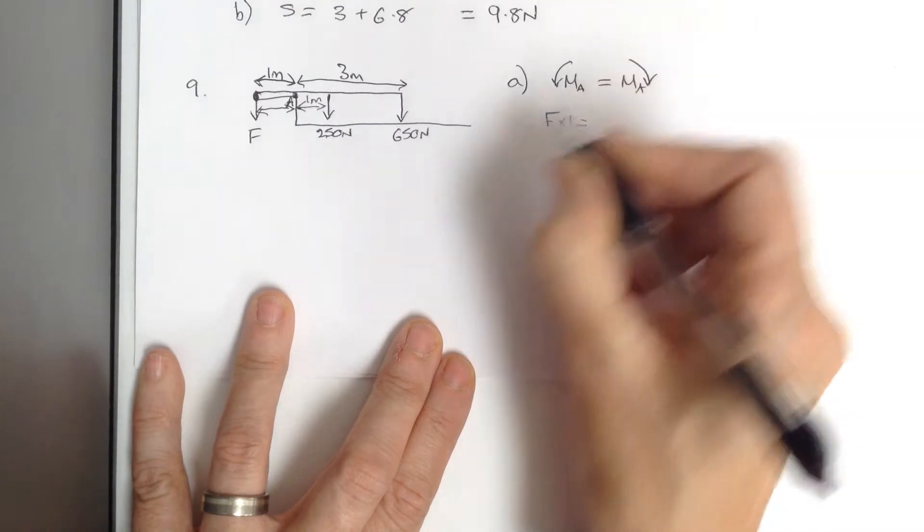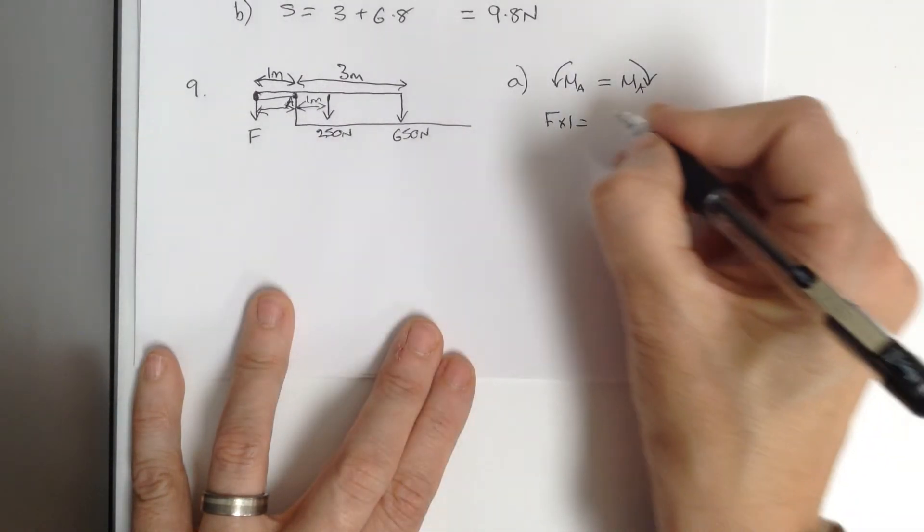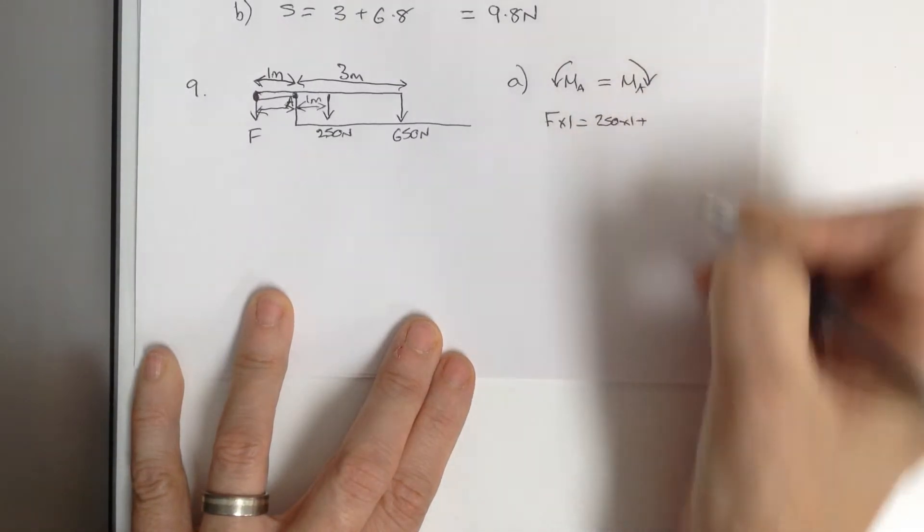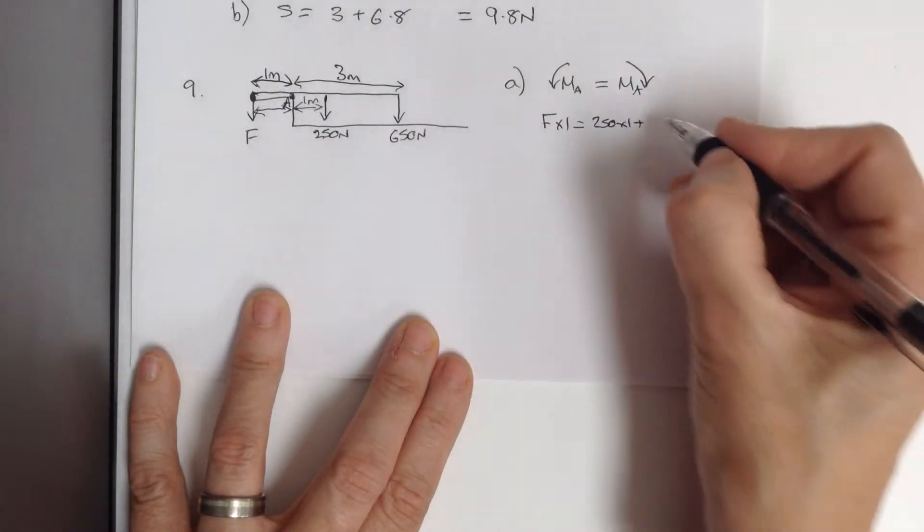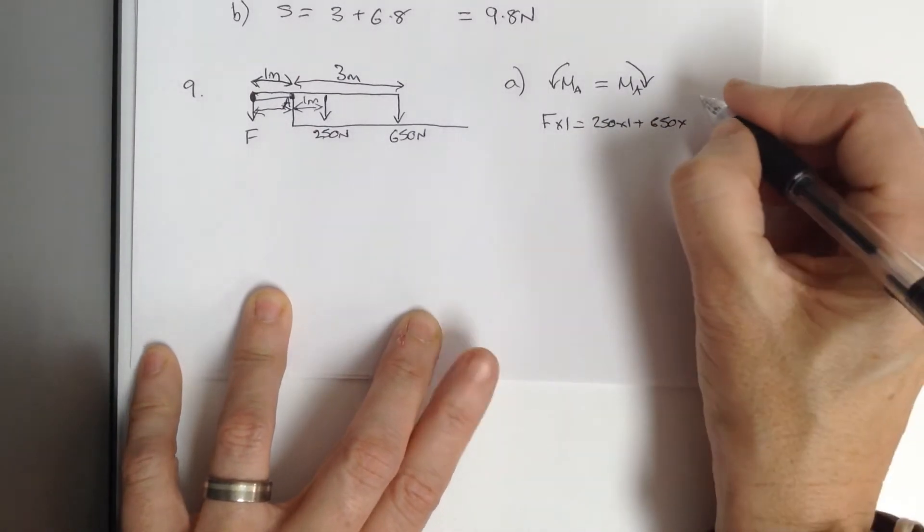So F times one would be equal to the weight of the board, 250 times one, plus the weight of the person, so that's 650 times three.